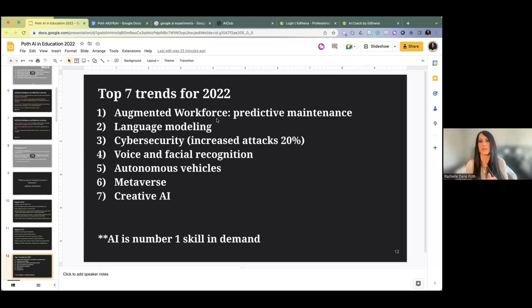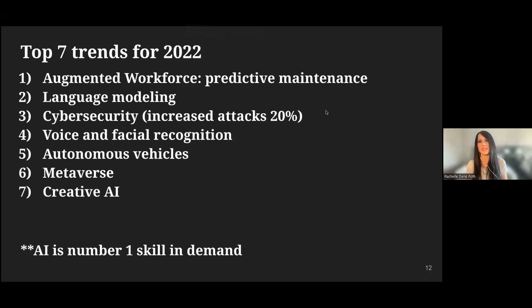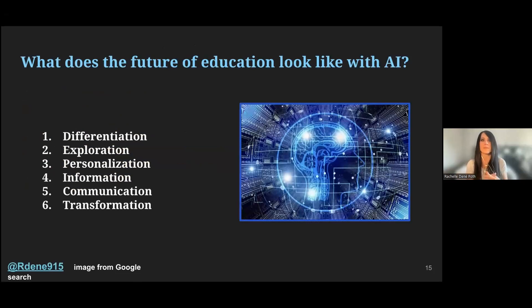Think about 2020 and the impact. For students interested in these fields, cybersecurity is definitely a growing field. There's also creative AI and the metaverse — I just joined the Ed3 DAO conference last weekend, an experience based on Web 3.0 in education. AI is the number one skill in demand. There are six different ways AI can help or impact us as educators: for communicating with students, accessing information faster, and even differentiating and personalizing learning.